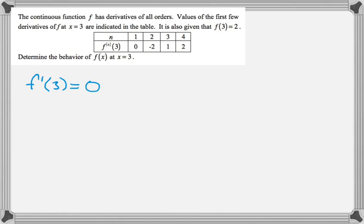So let's see. The next thing that we know, we know that from reading the table. The next thing we know is that f double prime of 3 is negative 2, also from the table. So actually, we can use the second derivative test to determine the behavior.